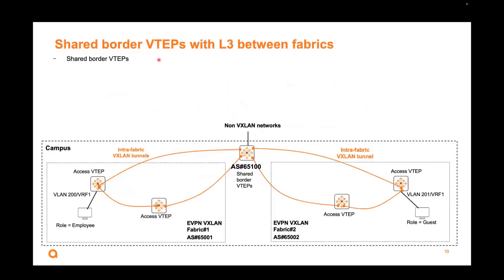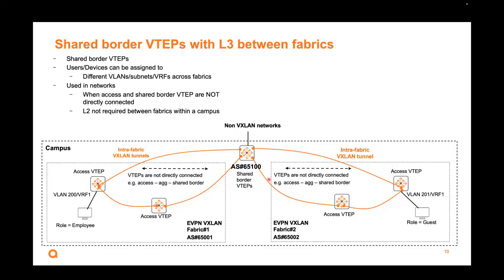The third use case is a shared border, but this shared border only supports layer 3 between the fabrics — there's no L2 between fabrics supported. This shared border is used when VTAPs are not directly connected. It can be done, but L2 is not required between the fabrics in this campus — only L3 is supported when using a shared border. This applies to multiple fabrics per site.